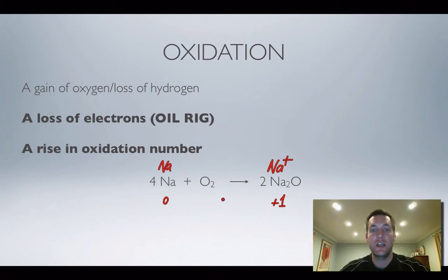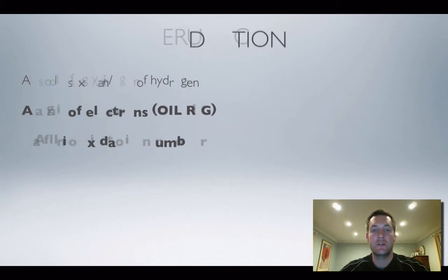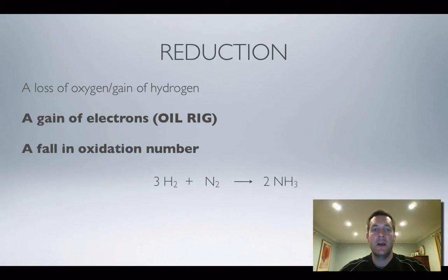This reaction had oxygen in it. This next one is going to have some hydrogen in it. But here's reduction. Now reduction is basically the opposite of oxidation. So that is to say it's a loss of oxygen or a gain of hydrogen. Now again, that definition isn't that important, but it can be a useful guide. But we're going to try and talk about reduction and oxidation in terms of electrons and oxidation numbers.